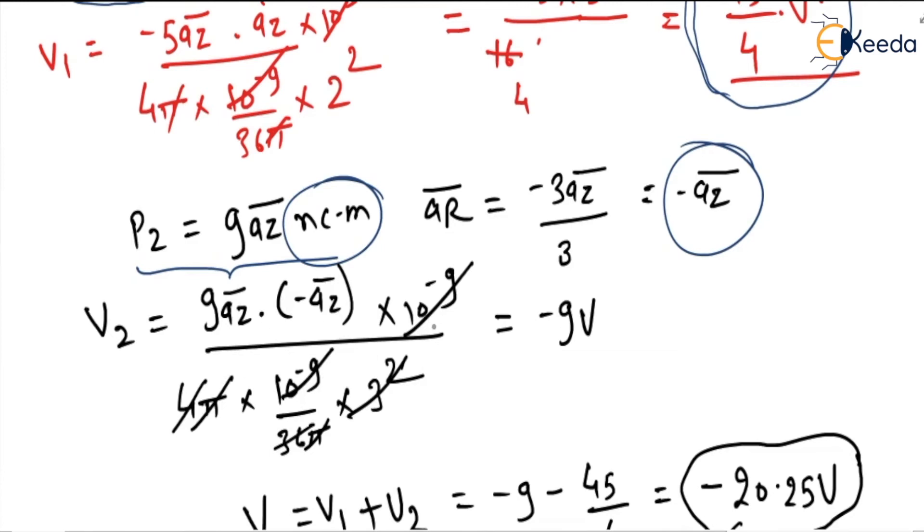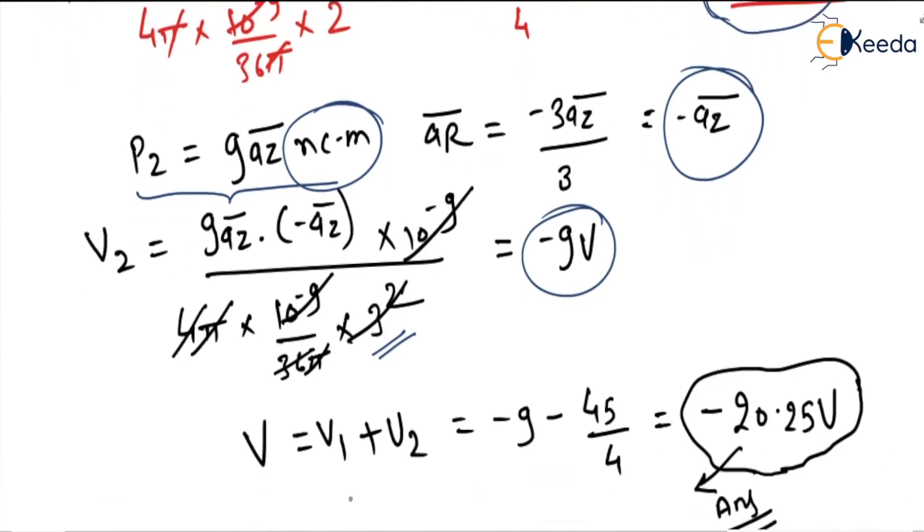times 10⁻⁹ (because of nano) divided by 4πε. Epsilon value is 10⁻⁹/36π times distance squared, which is 3². Solving this, the answer comes as -9 volts. Total potential V equals V1 plus V2.